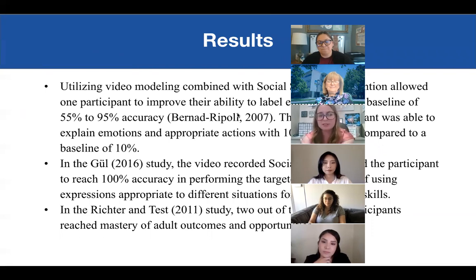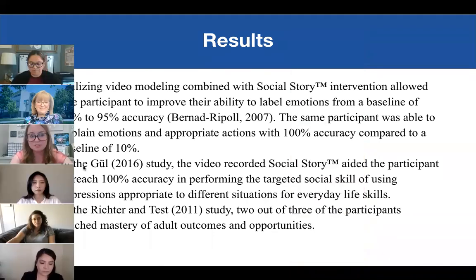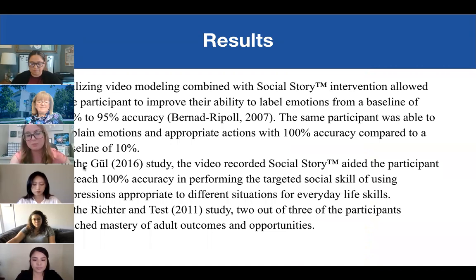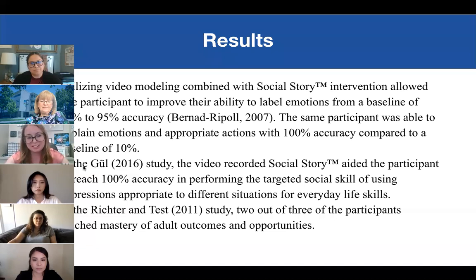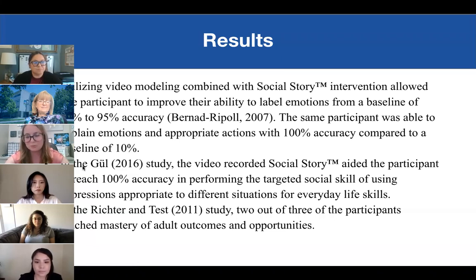Here are some results from the different studies. Utilizing video modeling combined with social story intervention allowed one participant to improve their ability to label emotions from a baseline of 55% to 95%. That same participant was able to explain emotions and appropriate actions with 100% accuracy compared to a baseline of 10%. In the next study, another video-recorded social story aided the participant to reach 100% accuracy in performing the targeted social skill of using expressions appropriate to different situations. Two out of three participants in another study reached mastery of adult outcomes.